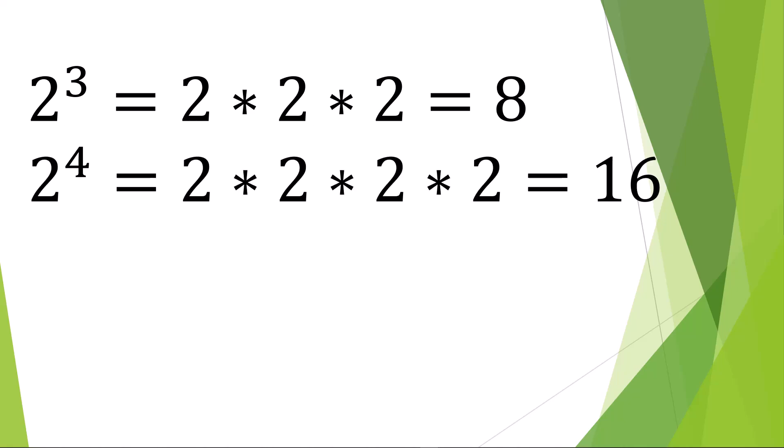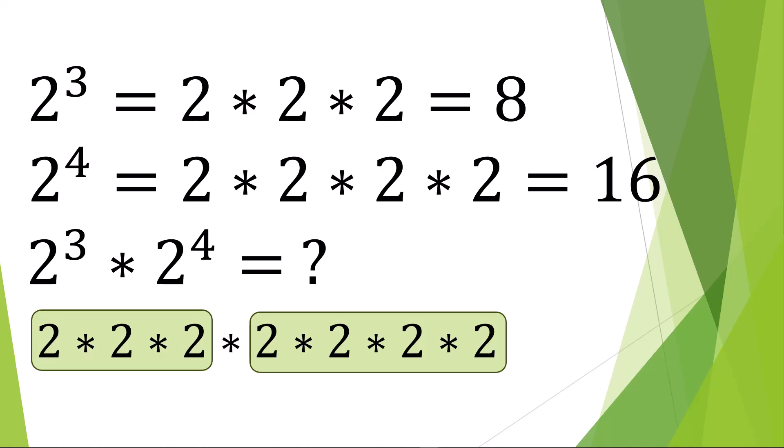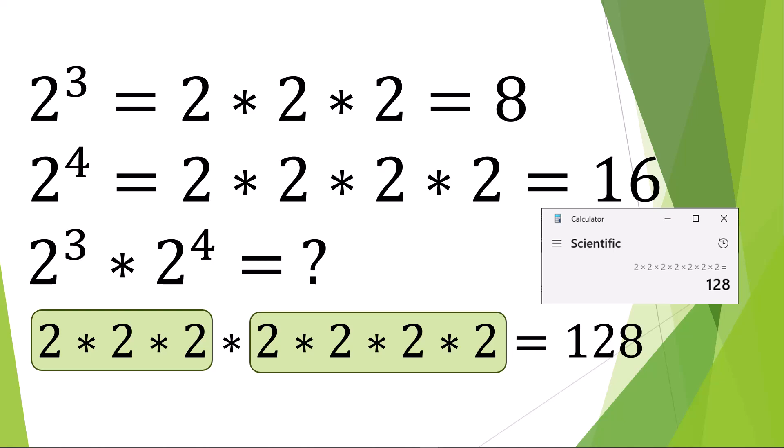Often, two different powers with the same base need to be multiplied together. Like the two examples we just explored, 2 to the 3rd power and 2 to the 4th. We can take the two final results, 8 and 16, and multiply them together to get 128. We can also express the two powers as a product, like this, and then list it all out with three 2's multiplied by four 2's. Again, the final value, 128.